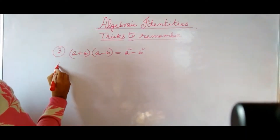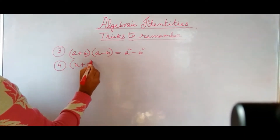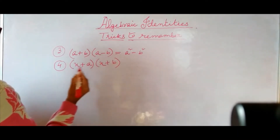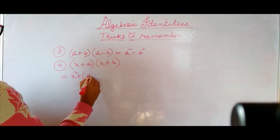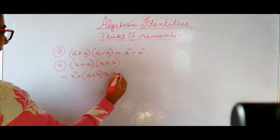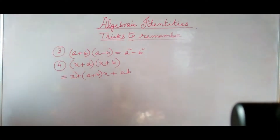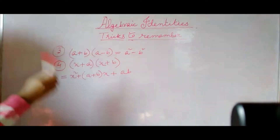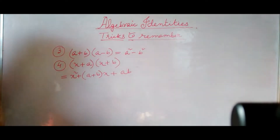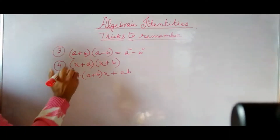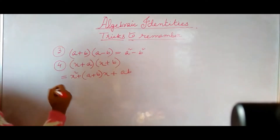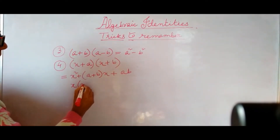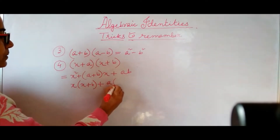So now the next formula we have: X plus A into X plus B. All of you know the formula for this: X square plus A plus B into X plus AB. Sometimes we think from where this formula has come. Actually we can derive it. Generally up to class 10 or 11, derivations of formulas are not required, but we can prove the theorems and derive the formulas. How to derive: you see X into X plus B plus A into X plus B.